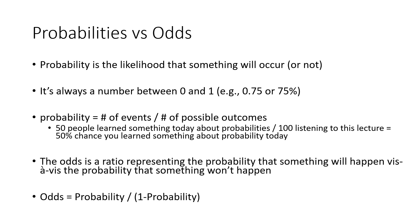Now that's probability — what about the odds? The odds is a ratio, not a single number. This ratio represents the probability that something will happen versus the probability that something will not happen. If you tend to go to the races, you're probably used to this term. The calculation of the odds equals the probability of something happening divided by 1 minus the probability.